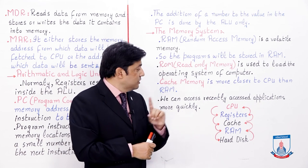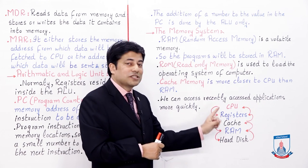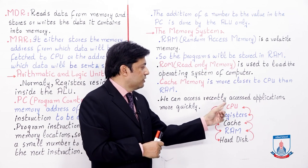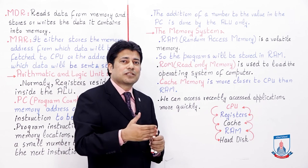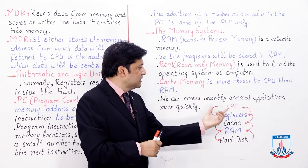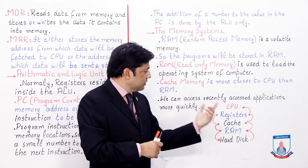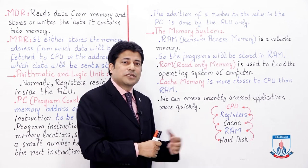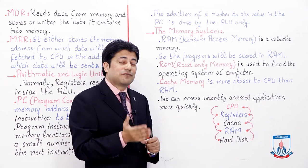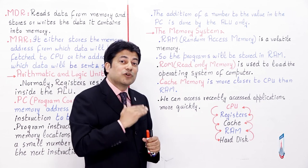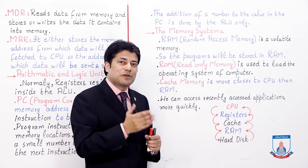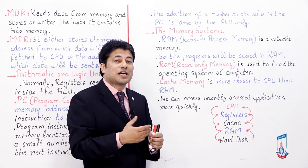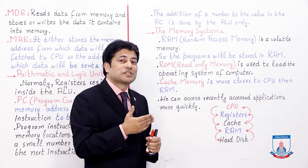Remember: the fastest memory is registers, because registers are nearest to and inside the CPU. The smaller the size, the faster the access speed and response time. Registers are in KBs, cache in MBs, RAM in GBs, and hard disk in TBs — though differences can exist.